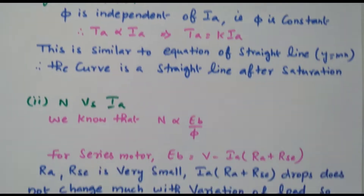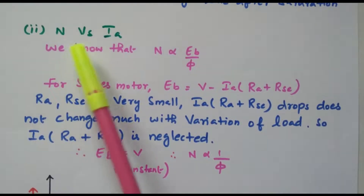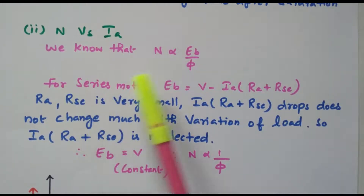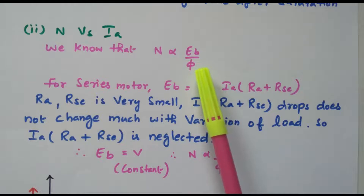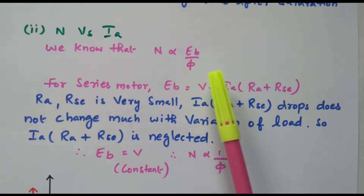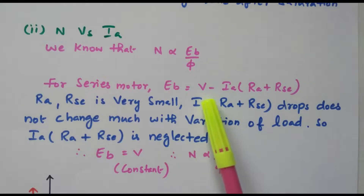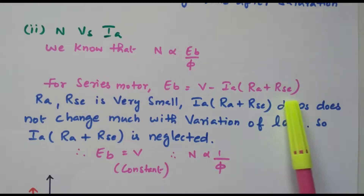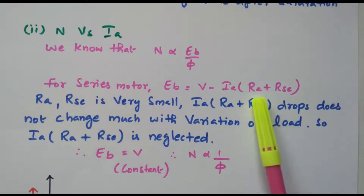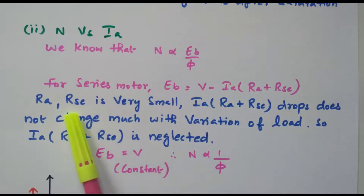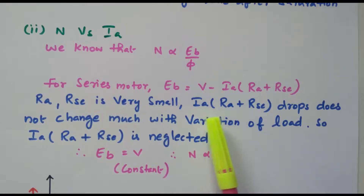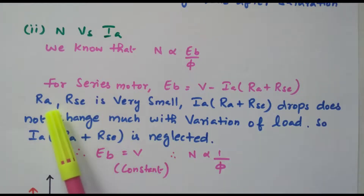Now the second characteristic: speed versus armature current. We know that N is directly proportional to E_B divided by φ — back EMF divided by flux, inversely proportional to flux. For a series motor the back EMF is given by V minus I_A(R_A + R_SE), because the armature is connected in series with the field winding. R_A and R_SE are very small, so the drop I_A(R_A + R_SE) does not vary much with load.